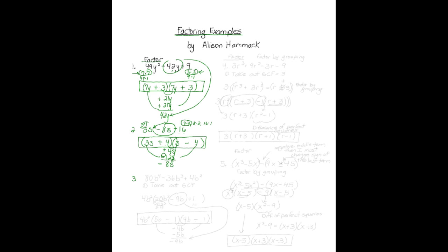Number three: eighty b to the fourth minus thirty-six b to the third plus four b squared. When I first look at this problem, step one, I want to take out the GCF. All of these numbers share a four, and they share a b squared. So I first want to take four b squared out of this trinomial. When I do that, I'm left with twenty b squared minus nine b plus one.